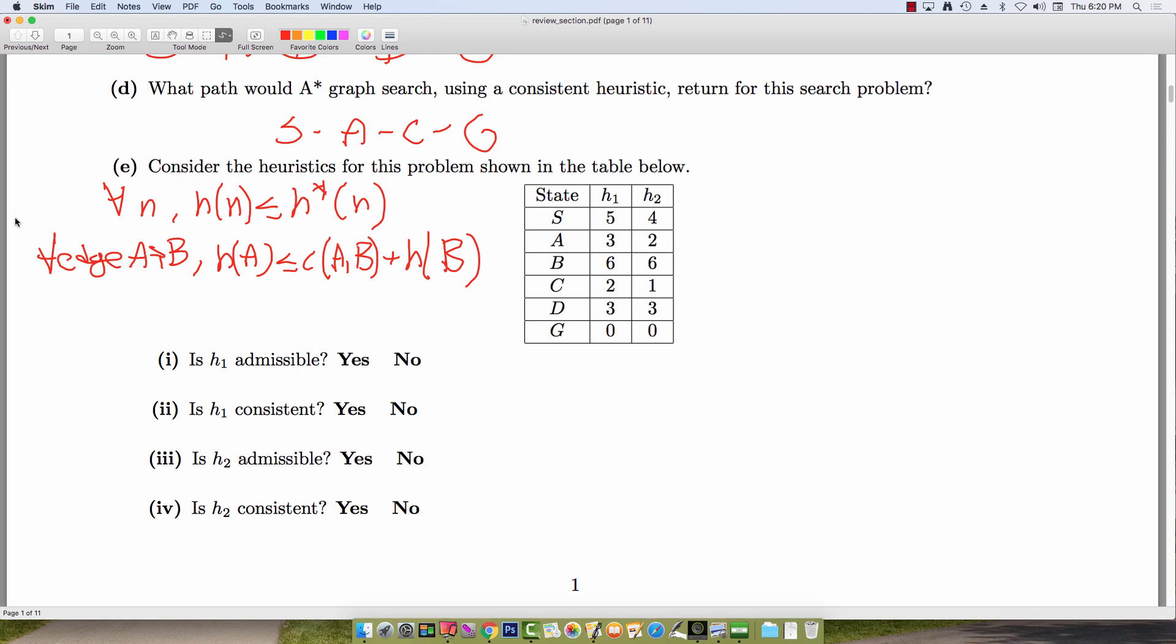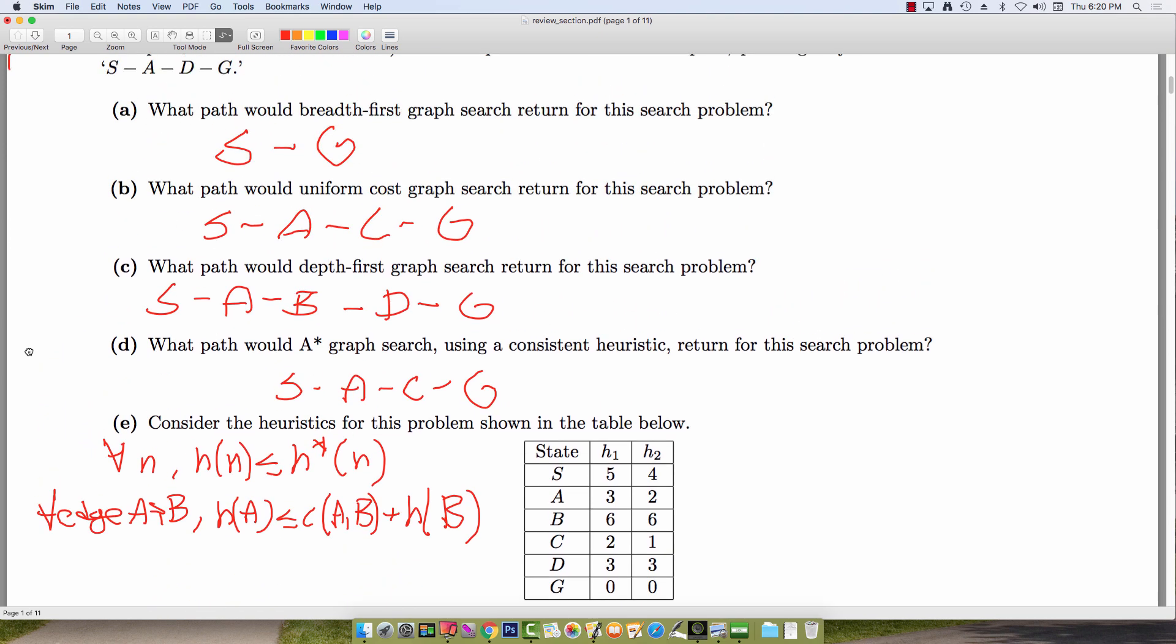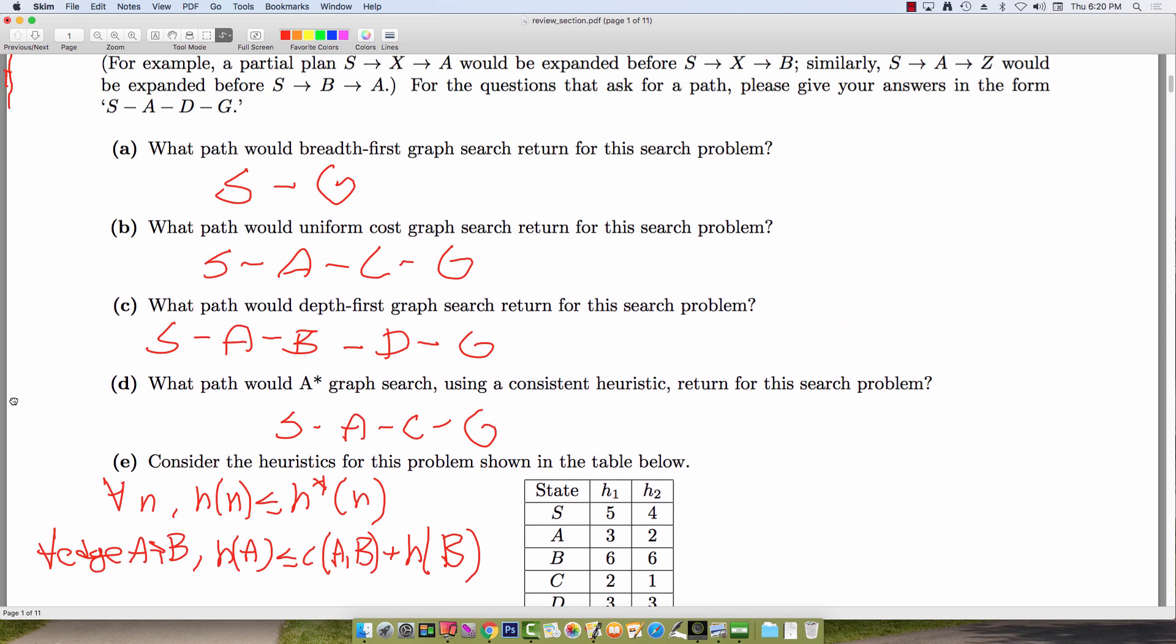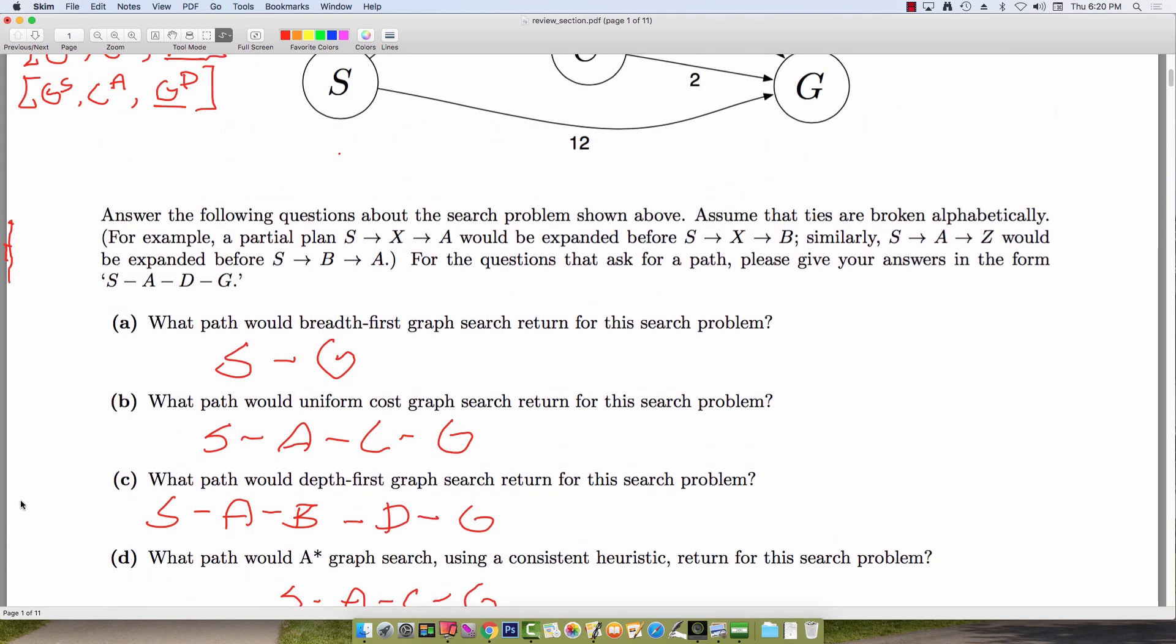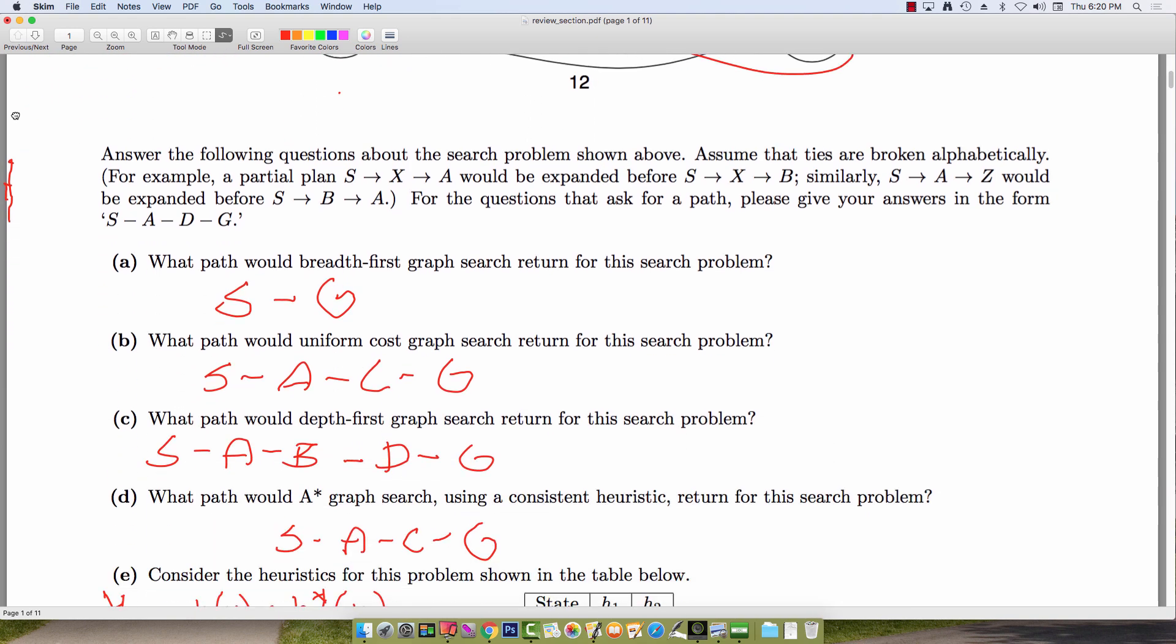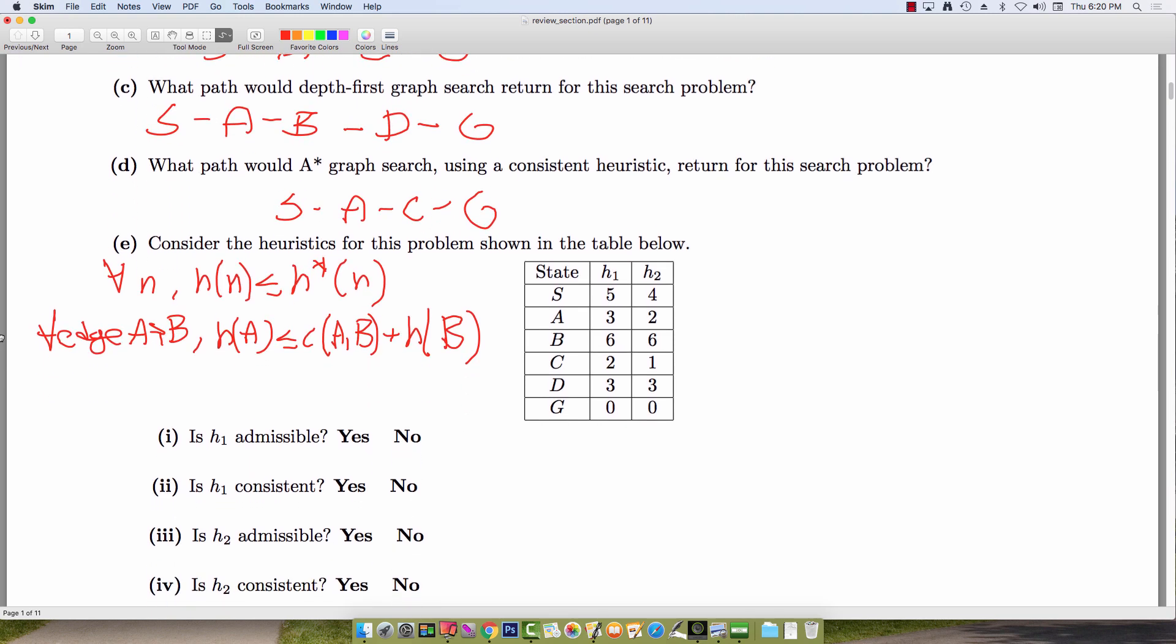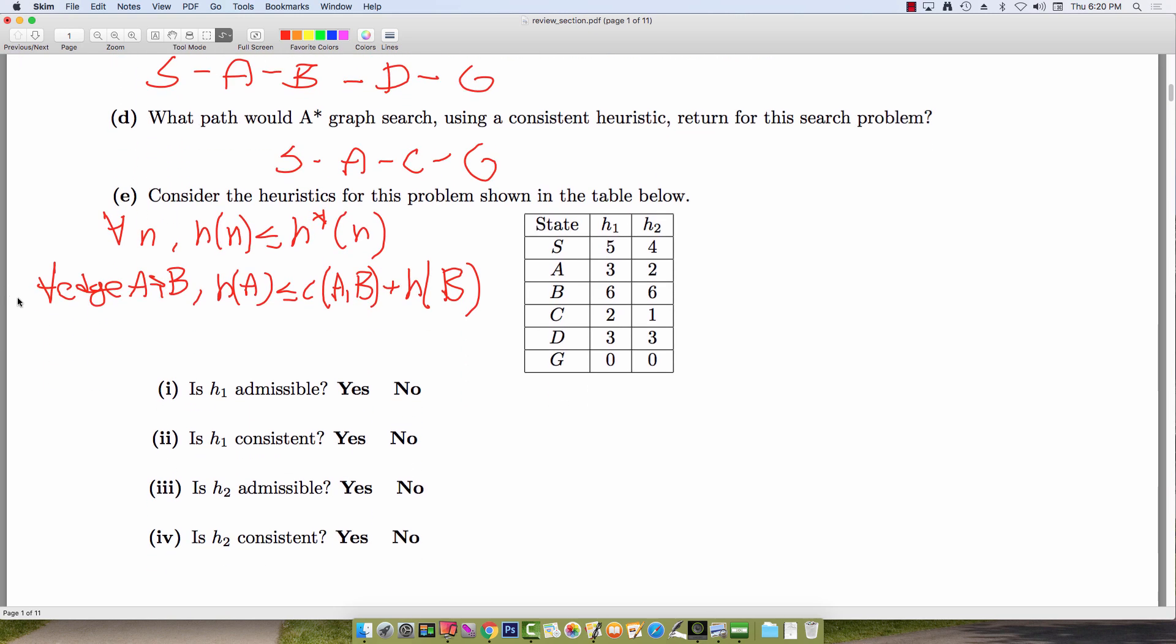So to test admissibility, it suffices to find some state that overestimates the true cost to the goal. So if we can find that, we'll know that the heuristic is inadmissible. So just from inspecting this, we see that the heuristic value for H1 of S is five. But we found in the previous part that the optimal path had total cost four. And so because of that, we know that H(S) is greater than H*(S). And so H1 is not admissible.